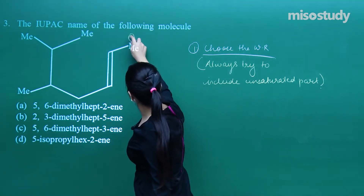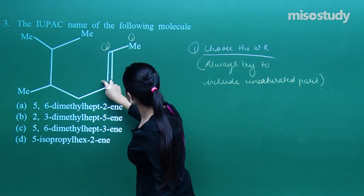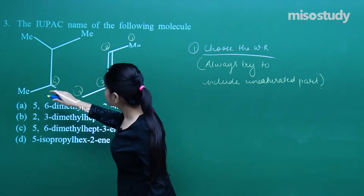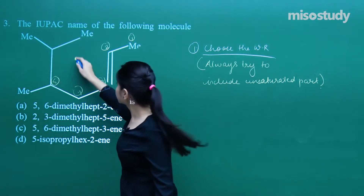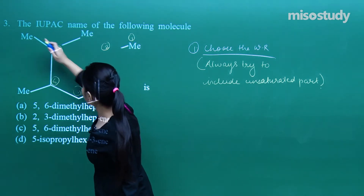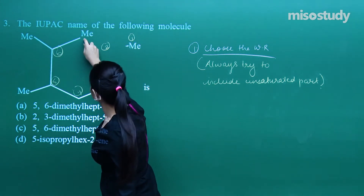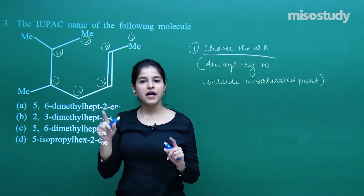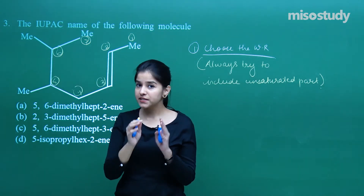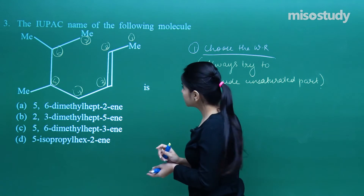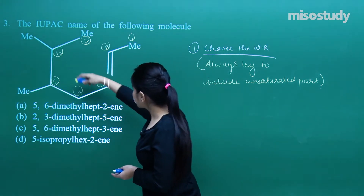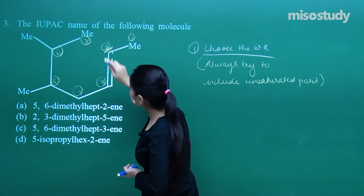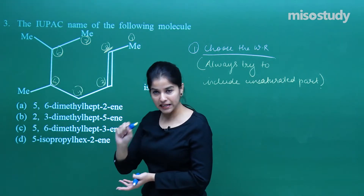You need to number it at the lowest possible position. So the lowest possible number will be given to this double bond. It would be 1, 2, 3, 4, 5. Again I need a longer chain — 6. I can go either this way or that way, so I am going this way — 7. Either way I will be getting 'hept', that means 7 carbon atoms as the word root. Now let us number it — I have got the double bond on to the second carbon, so 'een' at position 2.